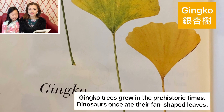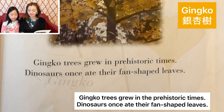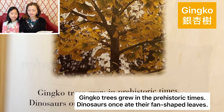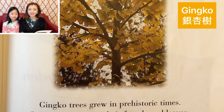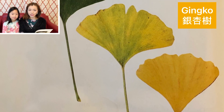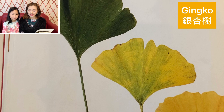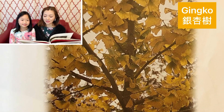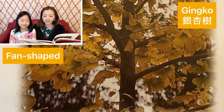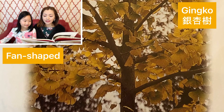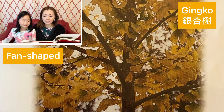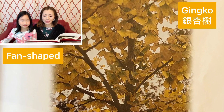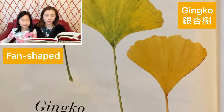Ginkgo. Ginkgo trees grew in prehistoric times. Dinosaurs once ate their fan-shaped leaves. 银杏。银杏树在史前时期就有了，恐龙曾经最喜欢吃它的叶子。来看一个词：fan-shaped leaves。这里fan就是指的像小扇子一样，shaped指的是形状，所以fan-shaped leaves就是像扇子形状的叶子。